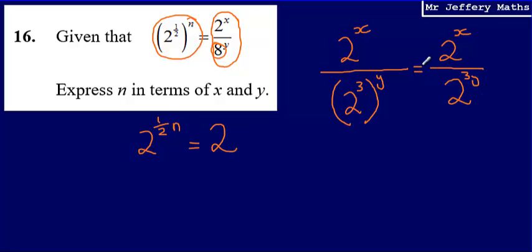Now, if I were to write this as a single power of 2 — so 2 to the power of x divided by 2 to the power of 3y — to write this as a single power of 2, I just need to subtract the powers. So I can say that this is 2 to the power of x minus 3y.